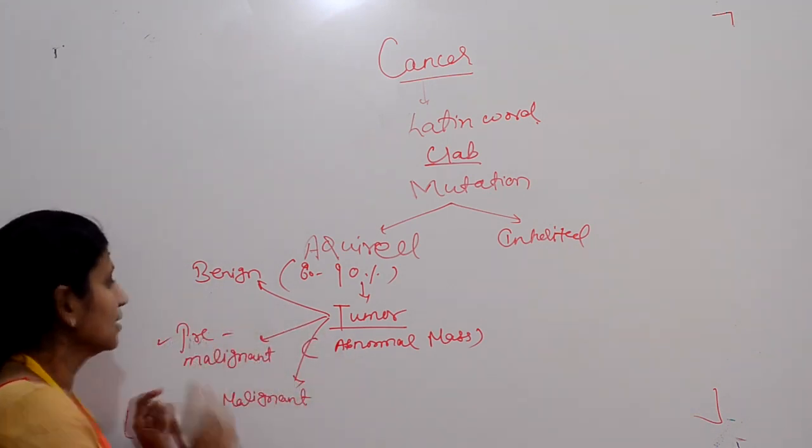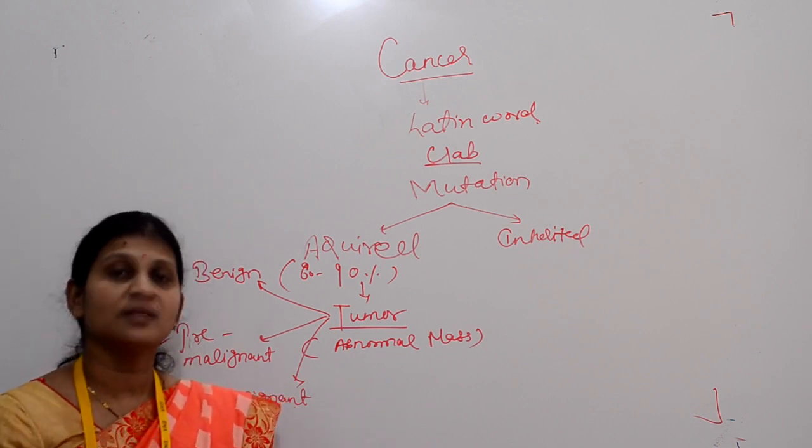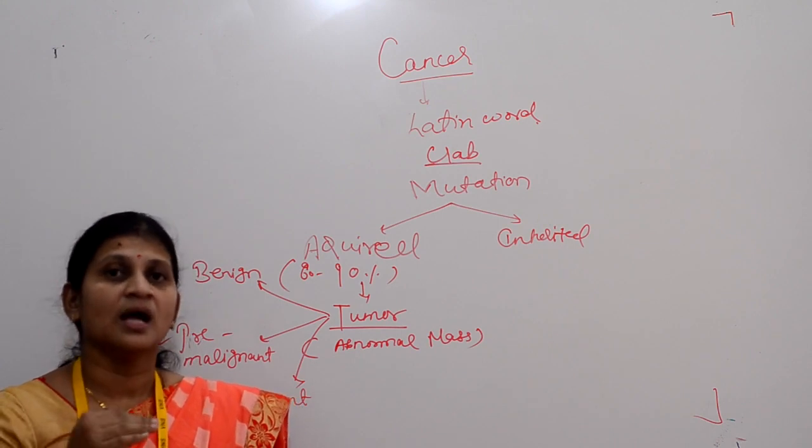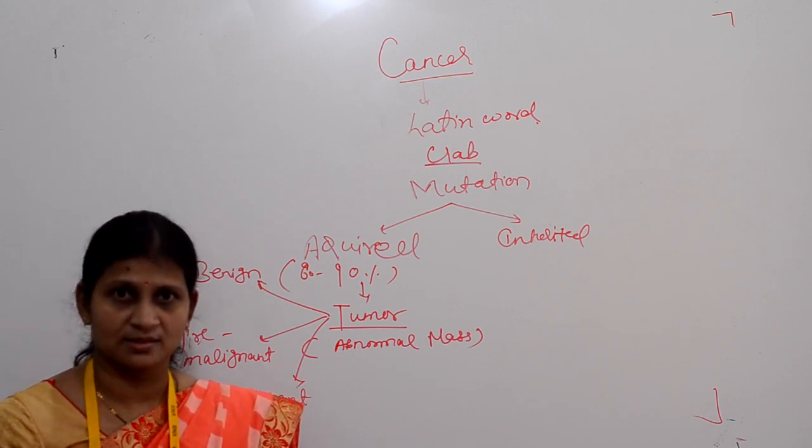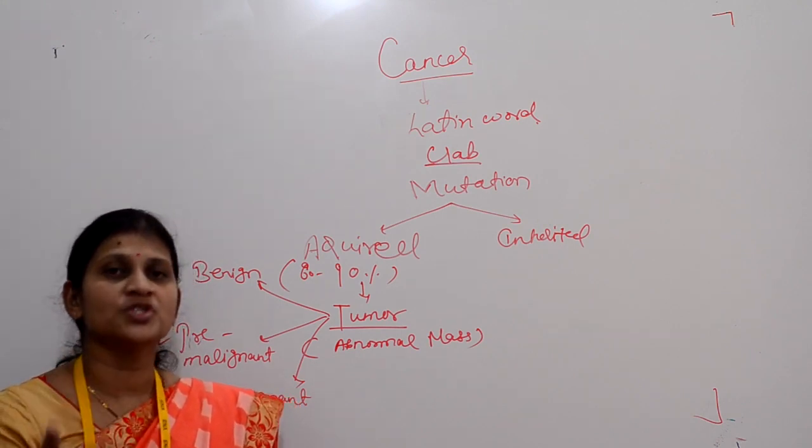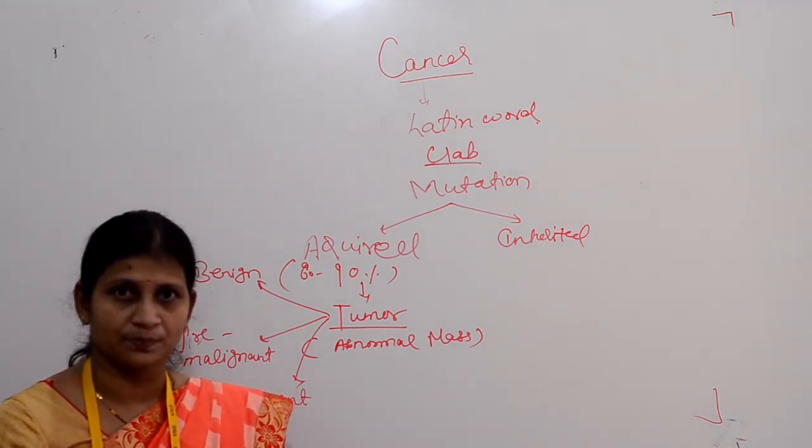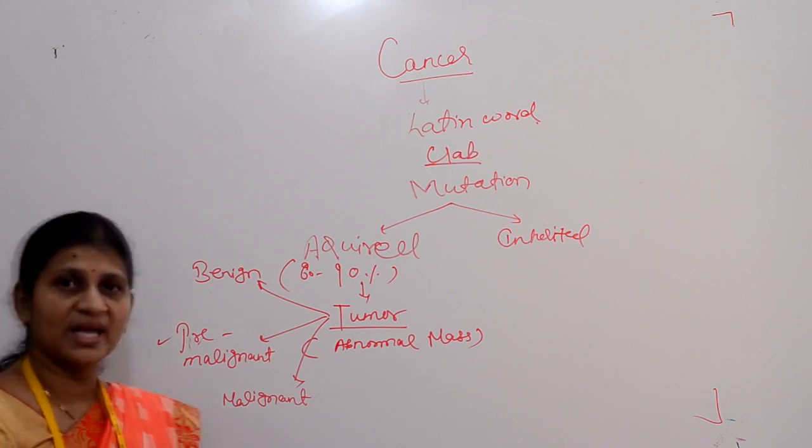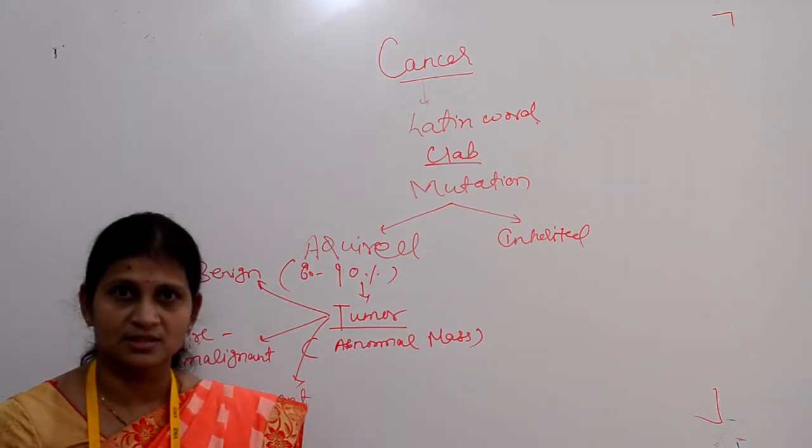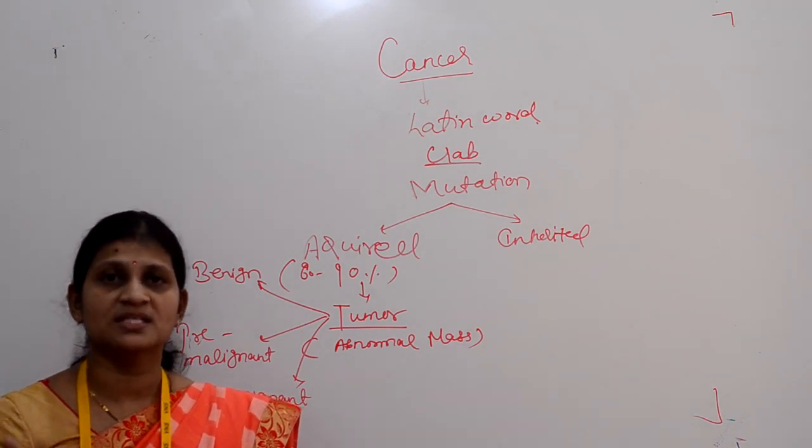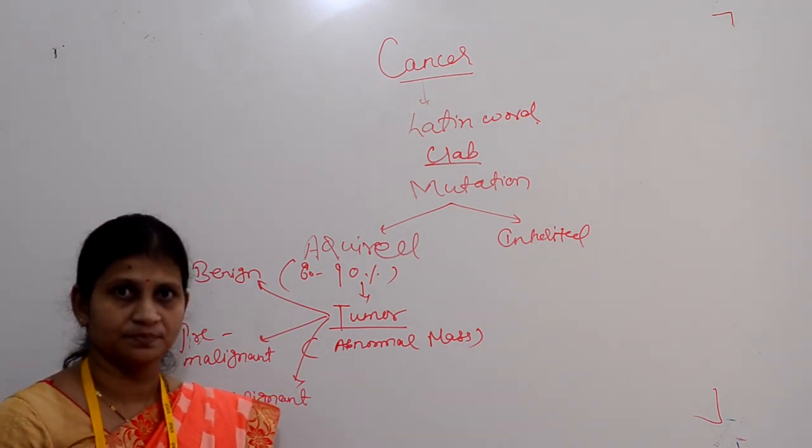In case of pre-malignant tumor, the cells are not yet cancerous but in the future they may have potential to develop into cancerous cells. Malignant tumors are cancerous tumors and they may invade other tissues and cells of the human body.